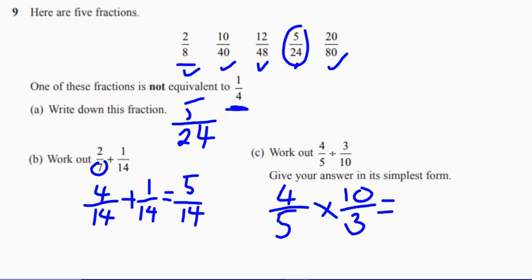And then it's exactly the same. These two questions are the same. So 4 times 10 is 40. And 5 times 3 is 15.